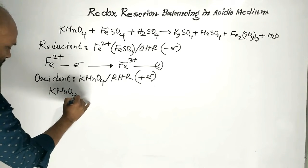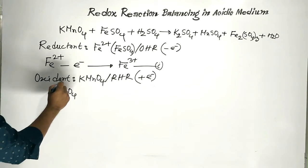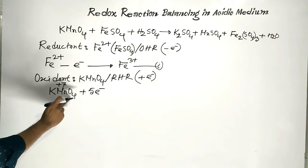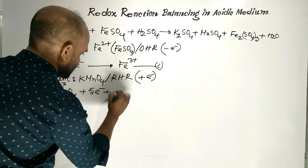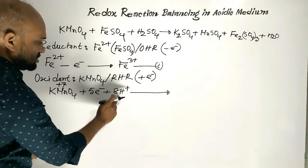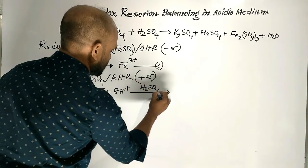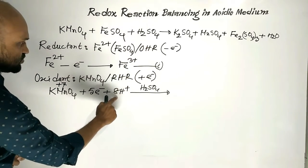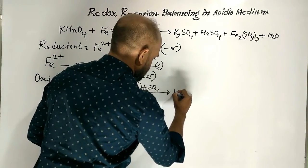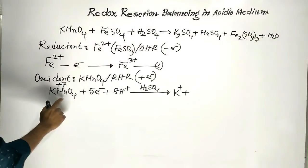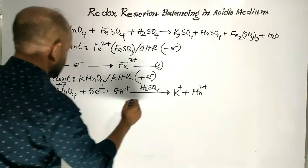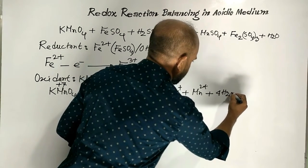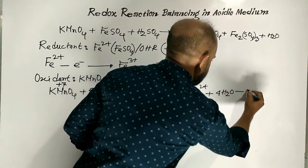Potassium permanganate: here the oxidation number of Manganese is +7. It accepts 5 electrons. The 4 oxygen atoms need 8 protons to form water. These protons come from Sulphuric Acid, because the reaction is conducted in the presence of Sulphuric Acid. The products are the Potassium Ion and Manganese 2+ Ion. Manganese 7+ changes to Manganese 2+ and 4 molecules of water are formed. Suppose this is equation number 2.